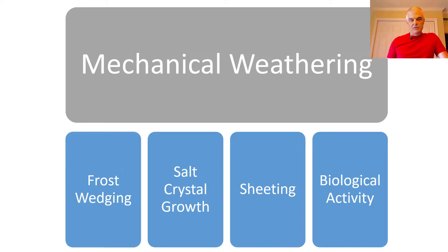When we talk about mechanical weathering, there are four kinds: frost wedging, salt crystal formation, sheeting, and biological activity. So let's talk about how these work. They're pretty cool actually.